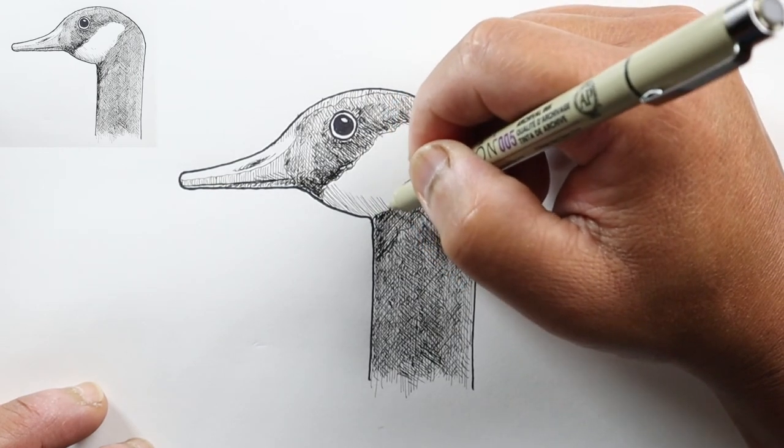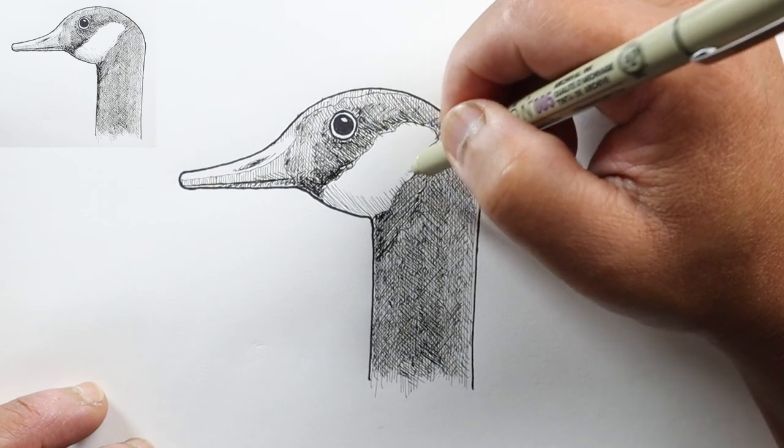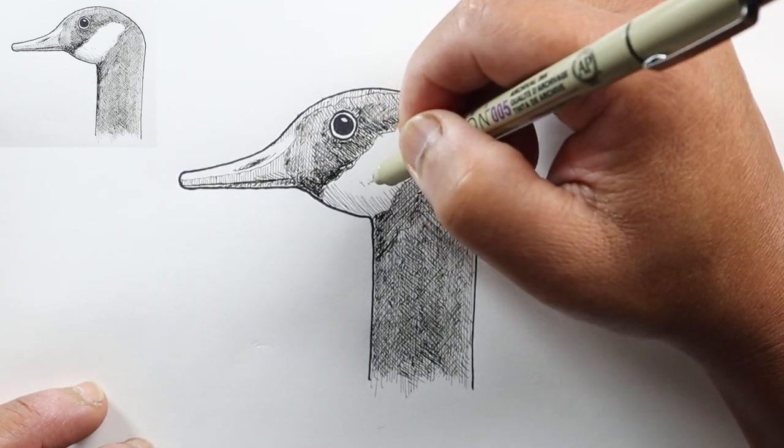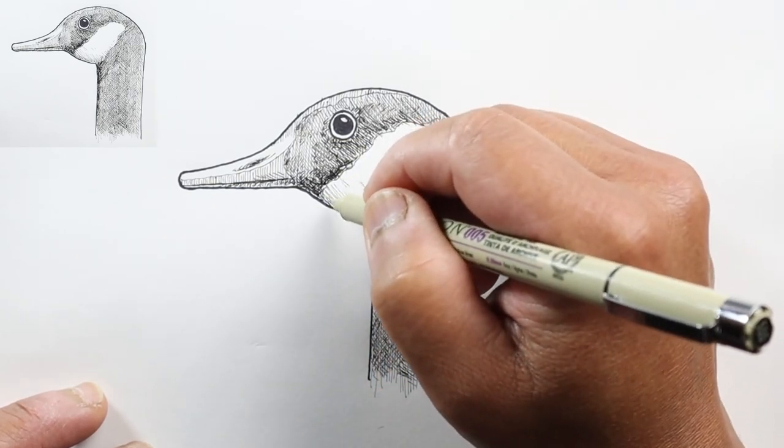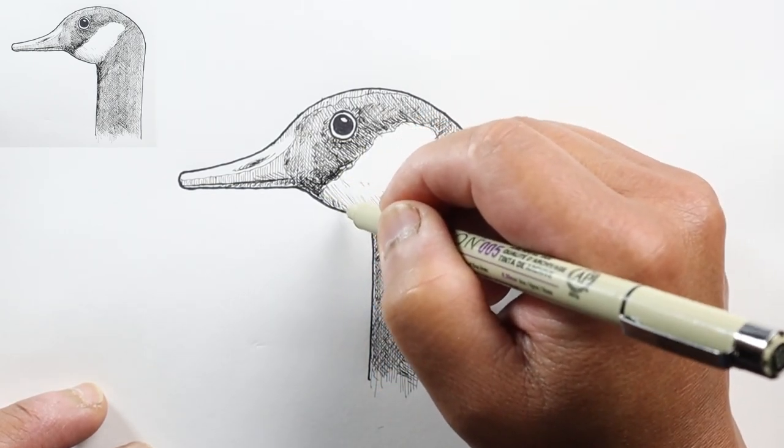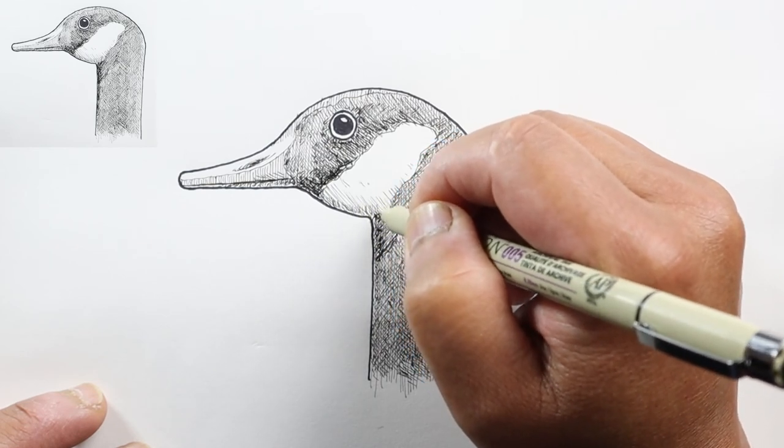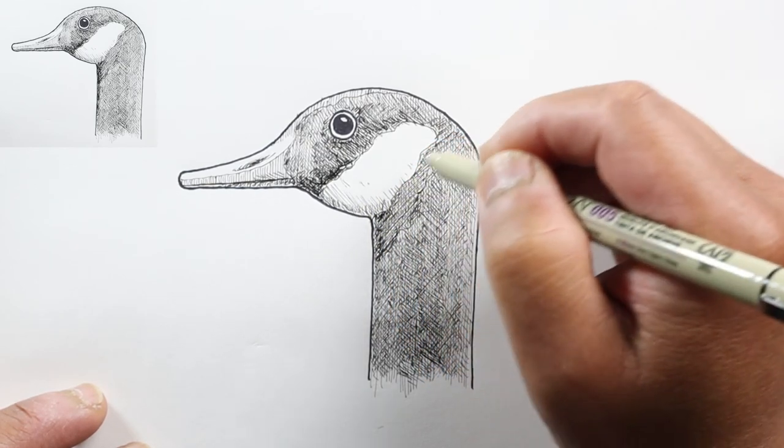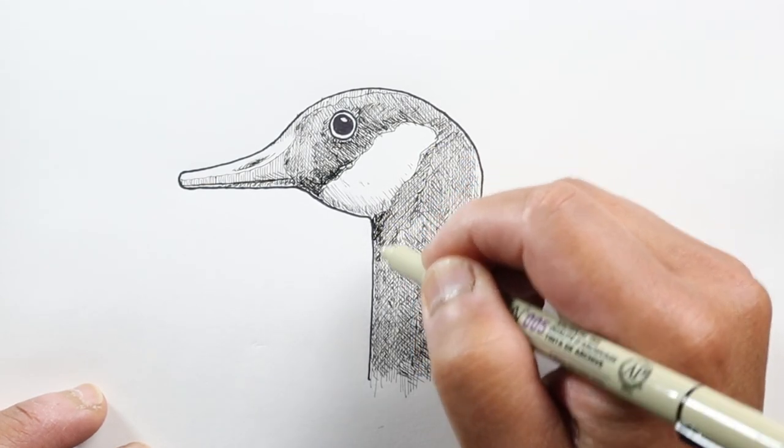As lightly as I can with my pen, just to show that there is some shape to this area, and add another layer of lines just at the very edge. That should pretty much do it. This is just a quick drawing of the head, and I hope you enjoyed this video.